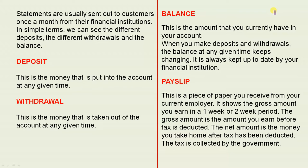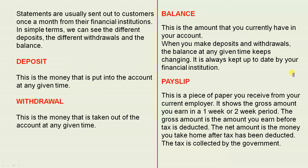When you make deposits and withdrawals, the balance at any given time keeps changing. It is always kept up to date by your financial institution. A payslip is a piece of paper you receive from your current employer. It shows the gross amount you earn in a one- or two-week period. The gross amount is the amount you earn before tax is deducted. The net amount is the money you take home after tax has been deducted. The tax is collected by the government.